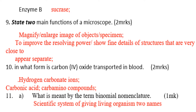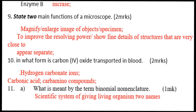Number ten: in what form is carbon dioxide transported in blood? That is as hydrogen carbonate ions, carbonic acid, and carbamino compounds. Number eleven: what is meant by the term binomial nomenclature? Binomial nomenclature is giving an organism two names, that is genus and species.